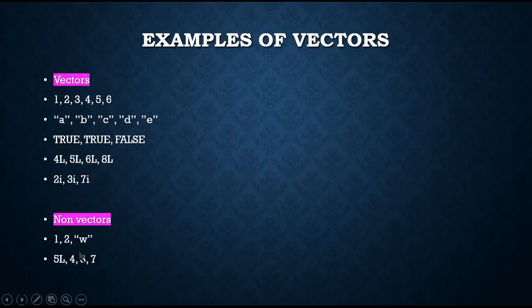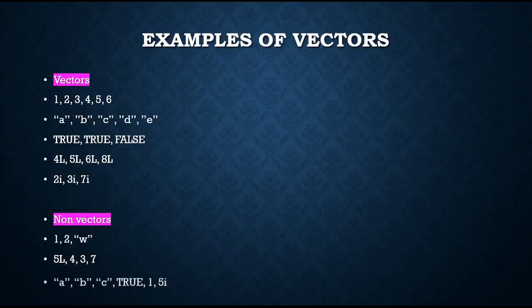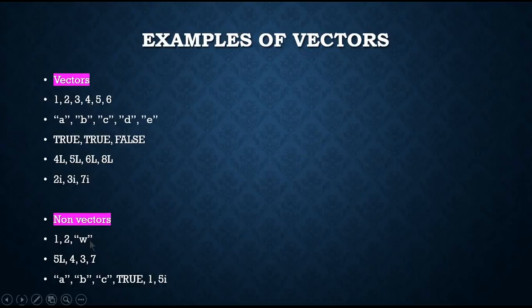Another non-vector example is 5L, 4, 3, and 7. This also contains two types of data — integer, because L in R represents integers, and 4, 3, and 7 are numeric data. This is another non-vector example containing character data, logical data, numeric data, and complex data. Because all these examples contain different types of data, they cannot be called vectors.